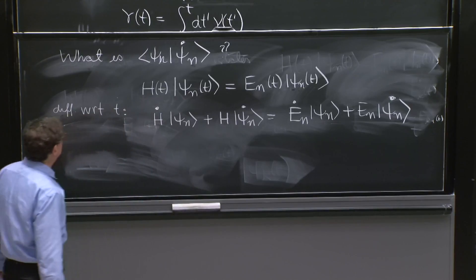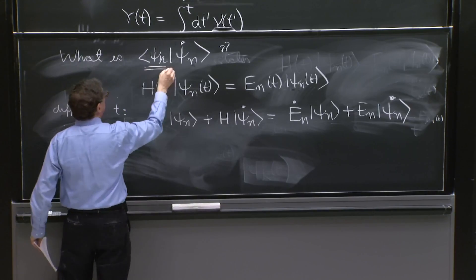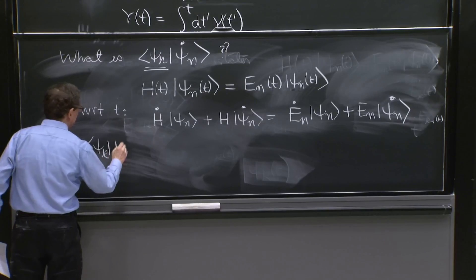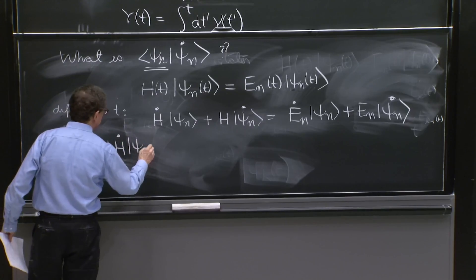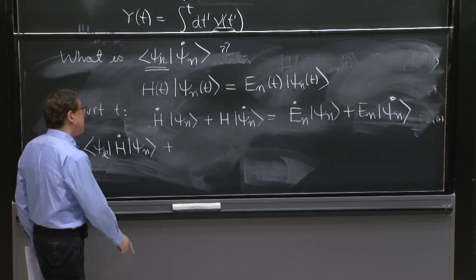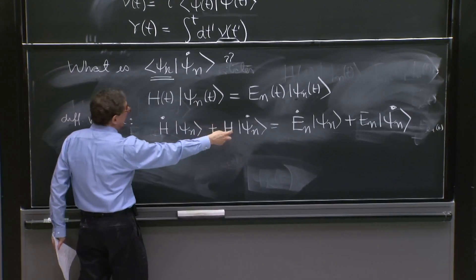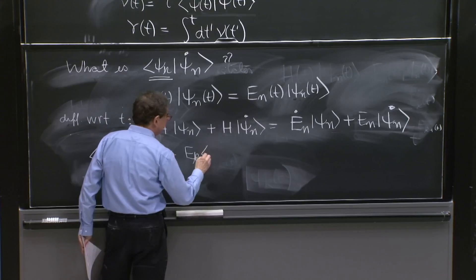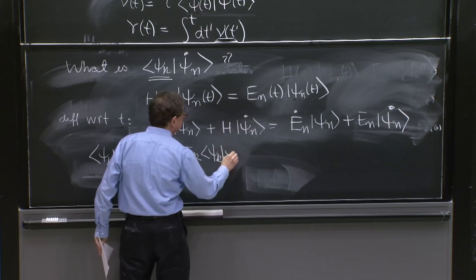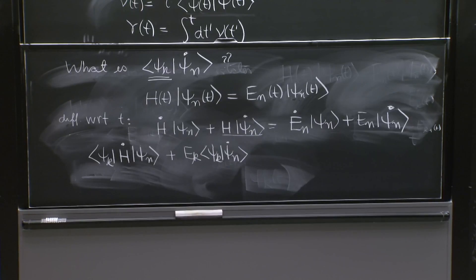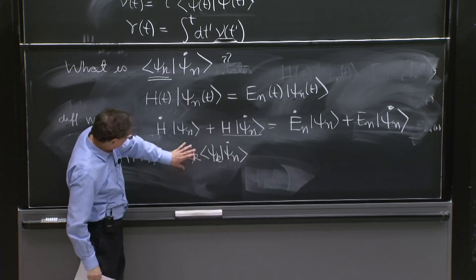And then we do what we want, psi_k here from the left. So we'll have a psi_k h dot psi_n. That's all that is left here. So we'll have an e_k psi_k psi_n dot. That's all that is left from this term. The psi_k came from the left and was acted by the h to give you an e_k times this.